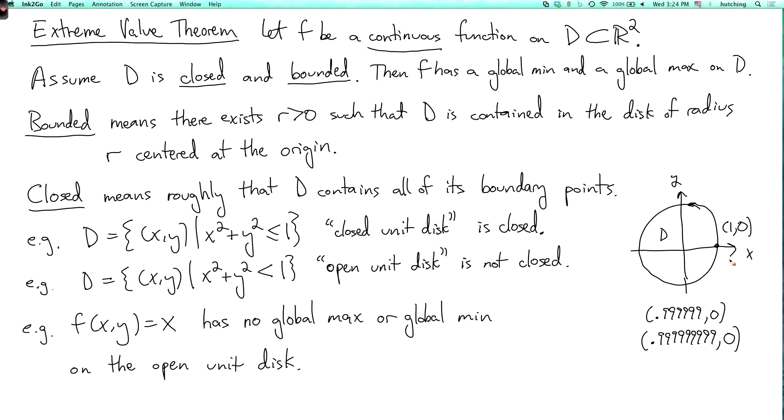And likewise, there's no global minimum. Because the minimum wants to be minus 1, but the point minus 1 comma 0 is not in the open unit disk.